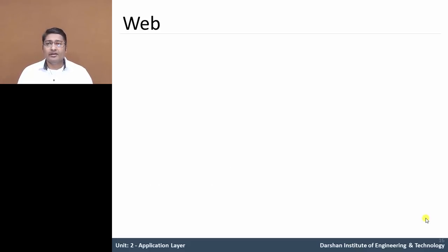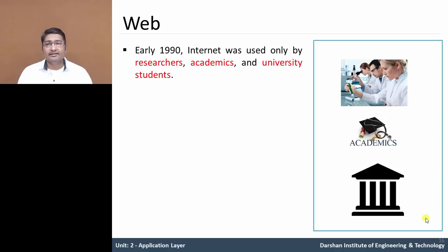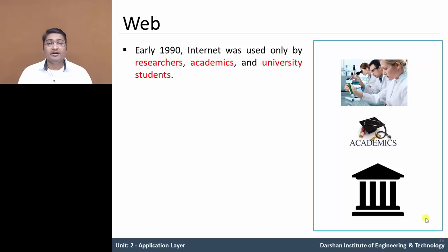Let us discuss the web. Before the 1990s, the internet was used only by researchers, academicians, and university students to log into remote hosts, transfer files from host to remote host or receive files, send and receive emails and news — but it was used internally, like in research development centers or universities, not known to the outside world.